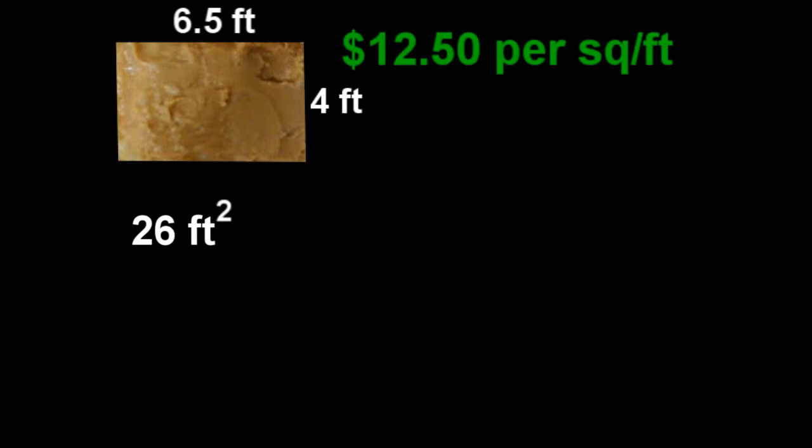So we take 4 feet times 6.5 feet, and for the total area of this plot of land, it's going to be 26 feet squared. So since the total plot of land is 26 feet squared, and the real estate owner is selling this plot of land for $12.50 per square feet, we take that, multiply it by 26, and we get the total amount in which the real estate owner is selling it for. And you'll be buying your new plot of land for $325. Must be a nice lemonade stand you're building.